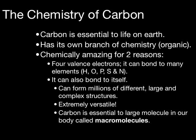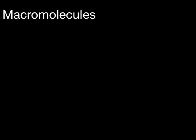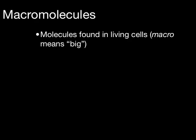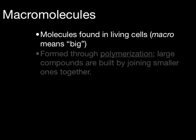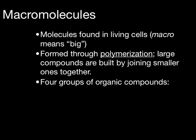One family of molecules that absolutely depends upon these traits of carbon are macromolecules. A molecule is formed when two or more different atoms are chemically combined — water is a good example, formed when two atoms of hydrogen are chemically combined with one atom of oxygen. Macromolecules are simply large molecules; some may contain hundreds of different atoms, while others like DNA can contain millions of atoms chemically combined to create one gigantic molecule. These gigantic molecules are formed through a process called polymerization, where large compounds are built by joining smaller ones together.